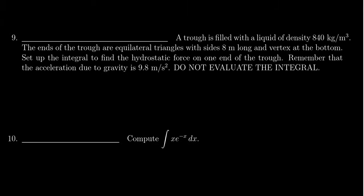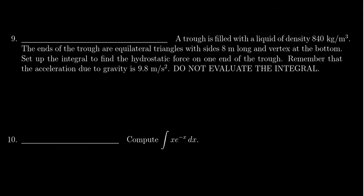A trough is filled with a liquid of density of 840 kilograms per meters cubed. That feels like a lot. What is this, like mercury or something? I don't know. So we have a trough that's filled with a liquid of density 840 kilograms per meters cubed. The ends of the trough are equilateral triangles.